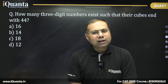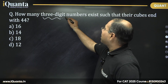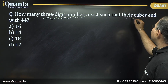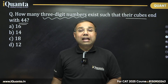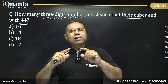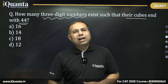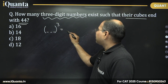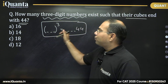So the question is: how many three-digit numbers exist such that their cubes end with 44? That means those numbers whose cube, when you cube them, end in 44 as the last two digits. Of course the result is not only 44 because we are cubing a three-digit number. A three-digit number when multiplied with itself two more times — we are cubing it — and the resultant number must end in 44 as the last two digits. We are looking for how many such three-digit numbers there are.